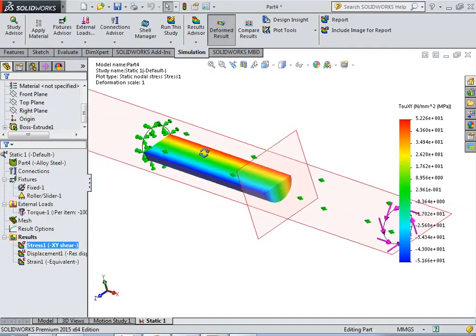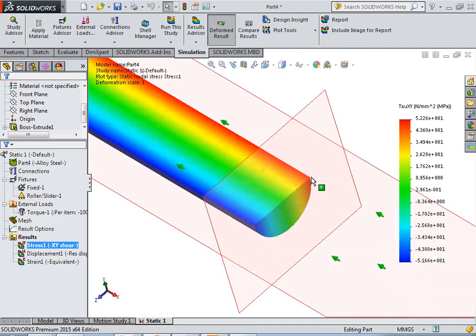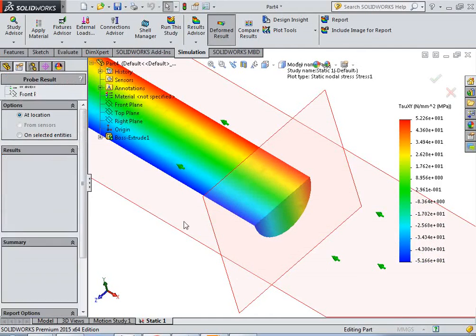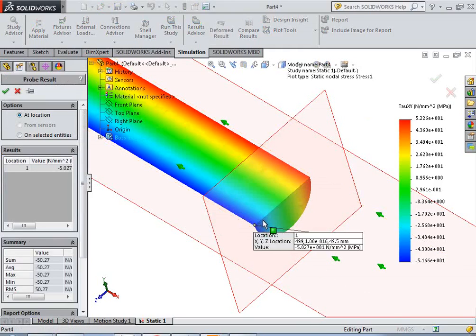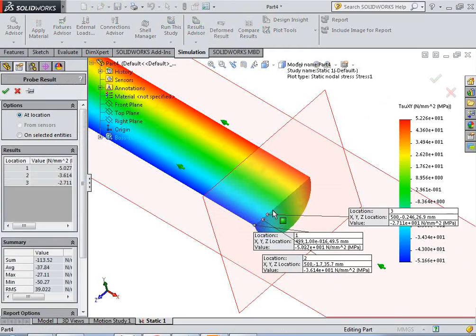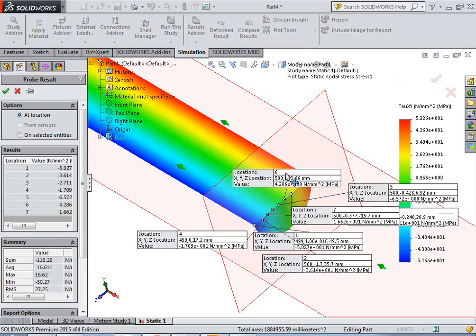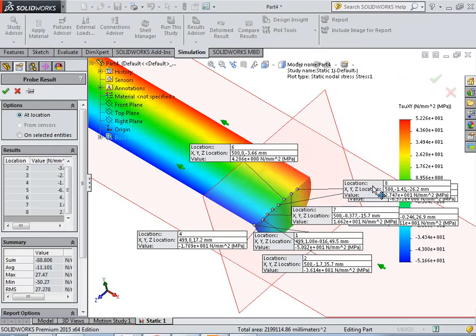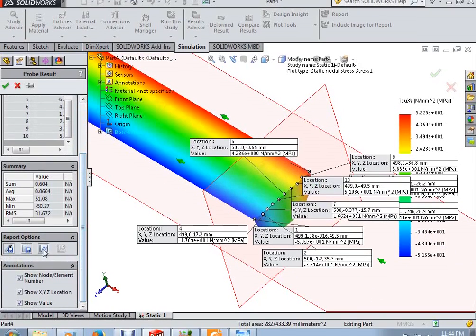So, you can see, we can plot stress here at this part. Right click, probe, select different points on this edge.